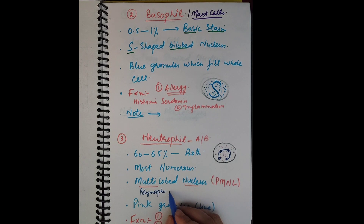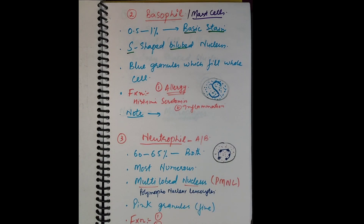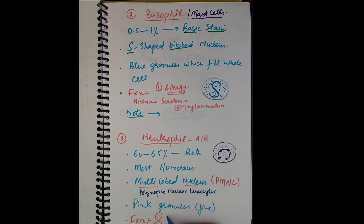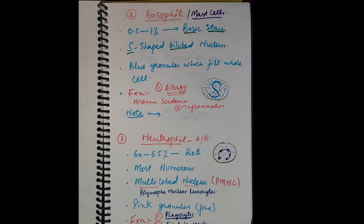Another name for neutrophils is polymorphonuclear leukocytes (PMNL), because the nucleus has variable morphology. The function of the neutrophil is phagocytosis — it is the first cell to reach the site of infection. It engulfs bacteria by endocytosis and kills them using different enzymes present within the cell.